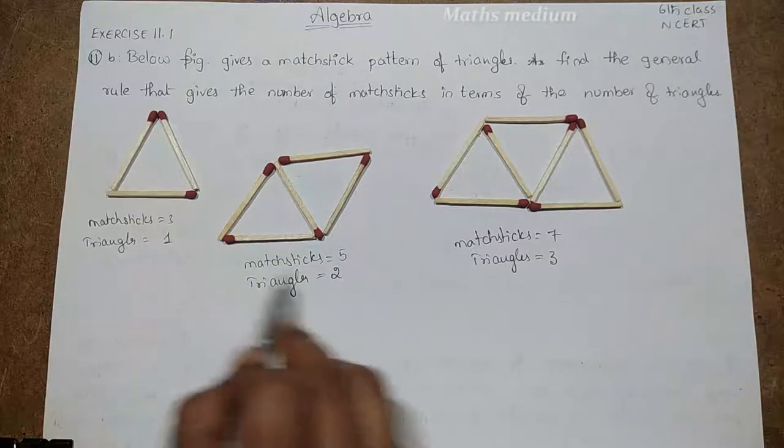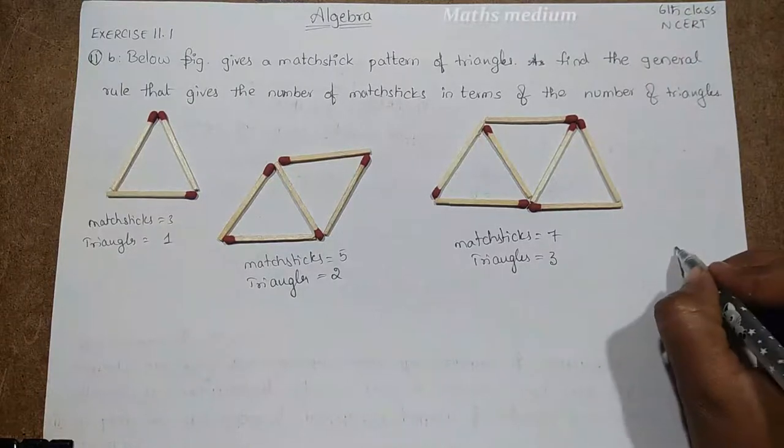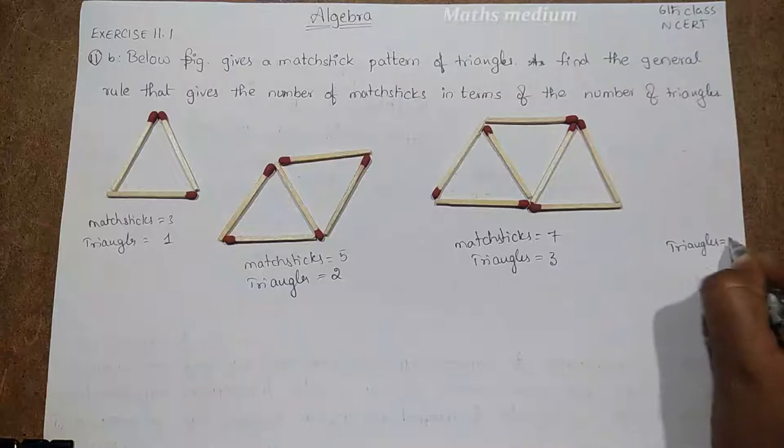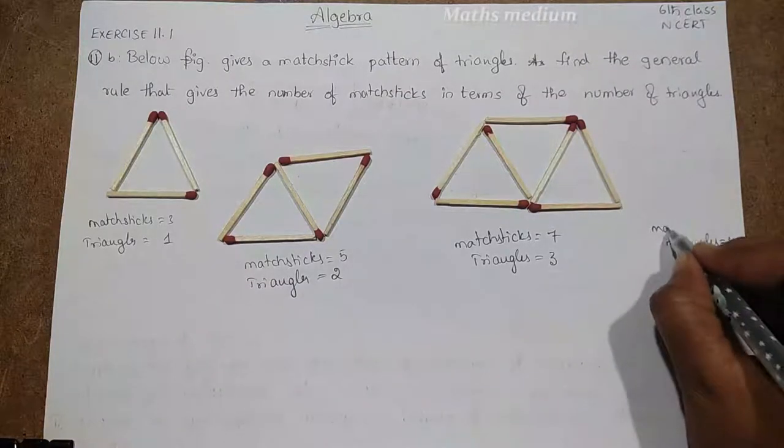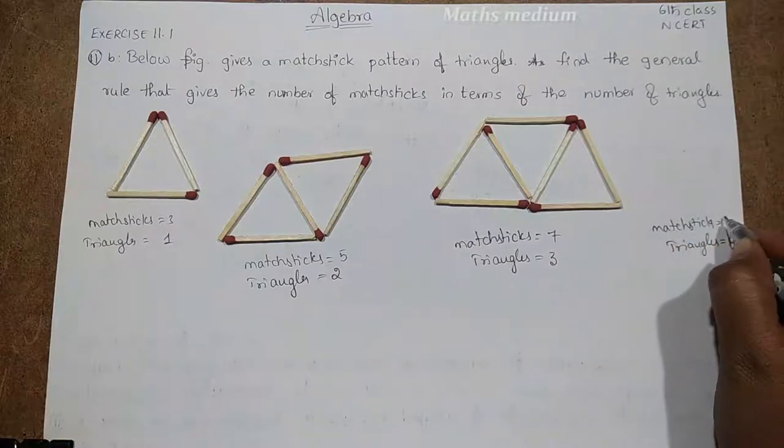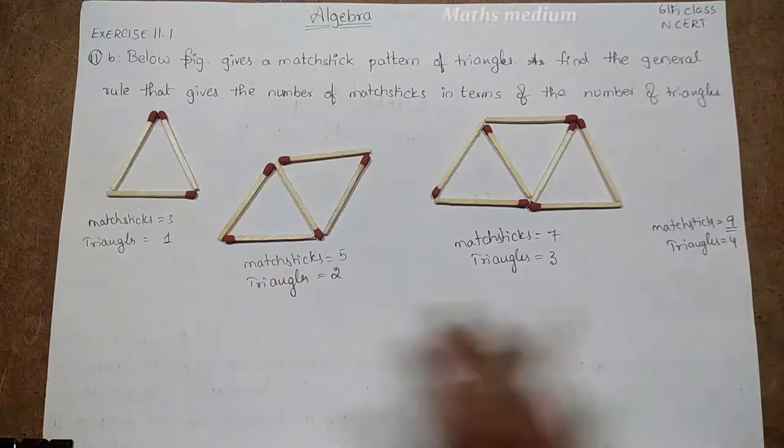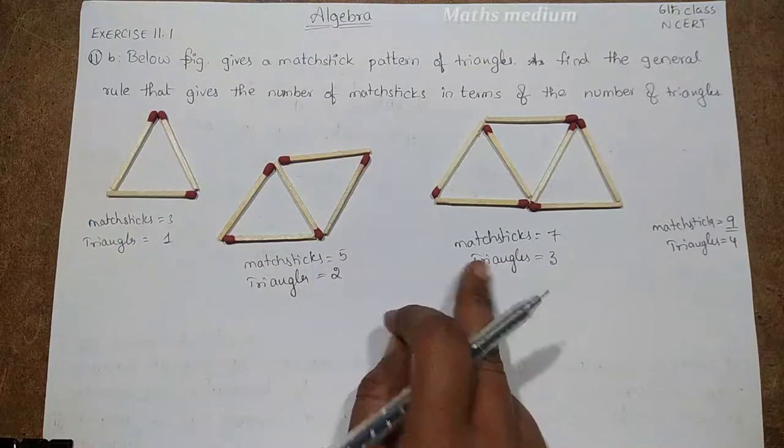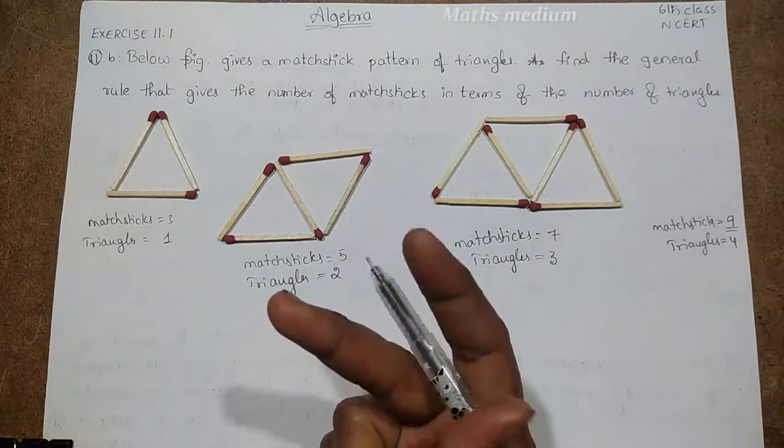Okay, so here 1, 2, 3, if in case 4 triangles, how many matchsticks do we need? Simple, it is 7 plus 2, that is 9. So every triangle, it means every pattern needs extra 2 more matchsticks.